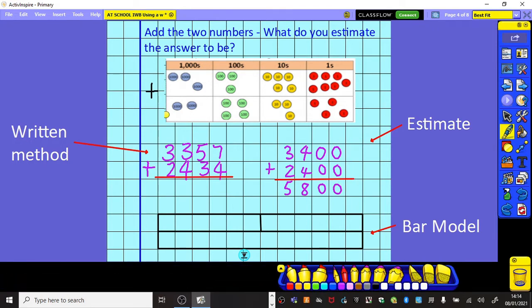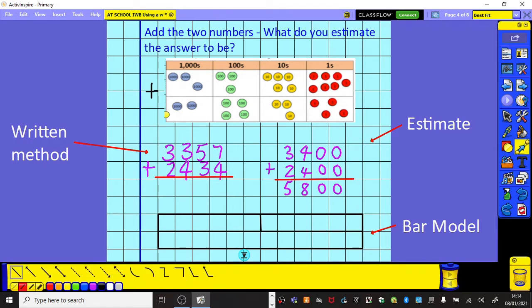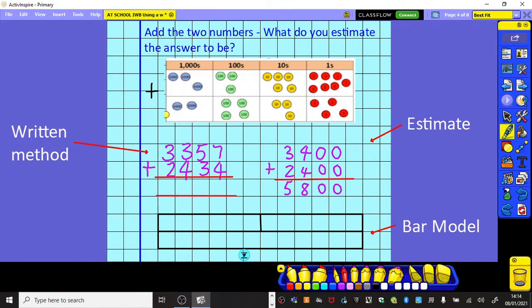Now, in terms of my written method, it does help, I think, to put an extra line underneath there so that we can show our carrying. First of all, looking at the ones column, 7 add 4 is 11. Now, we know that we put a 1 here and we carry the 1 underneath for 11.